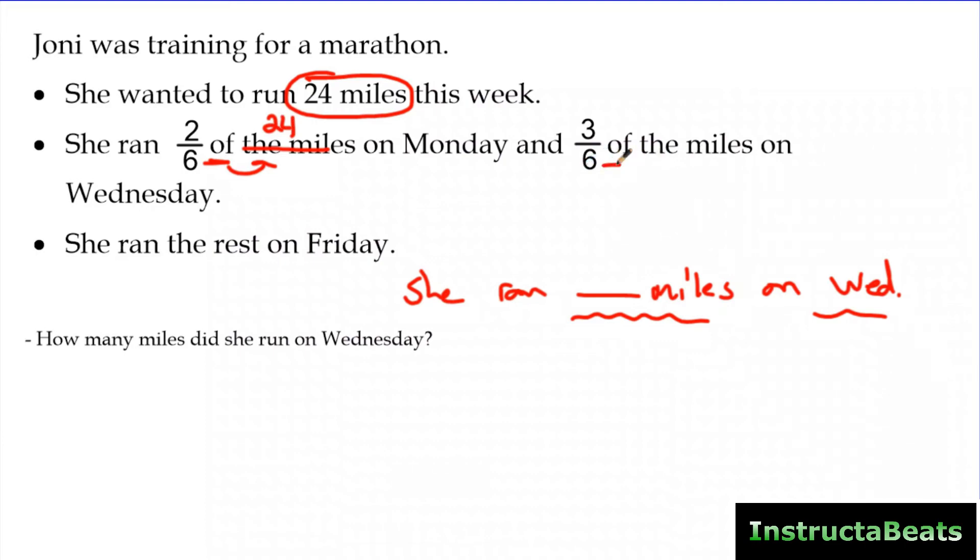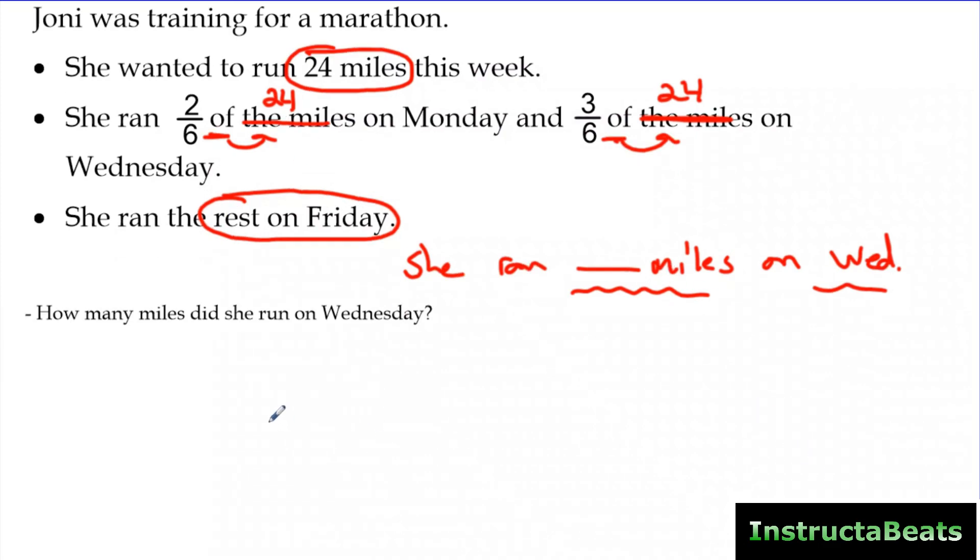And three-sixths of, again, the next words after this are the miles, not a mile, the miles, which again, we already know is 24. So I see that I'm doing a fraction of a group. And then of course, she ran the rest on Friday. They love that word, the rest. Whoever makes these tests love the word, the rest. So I know what type of tape diagram I'm going to draw.